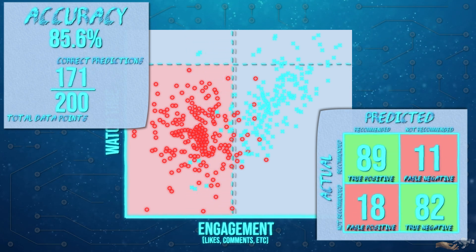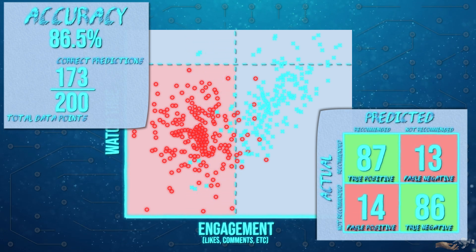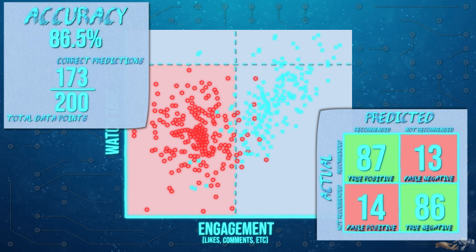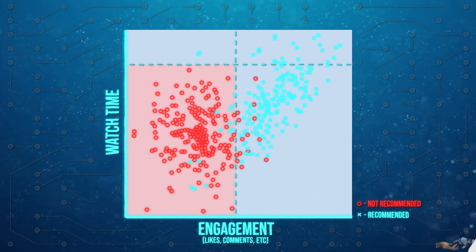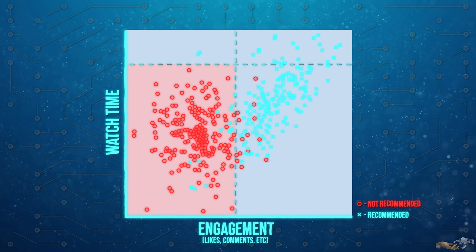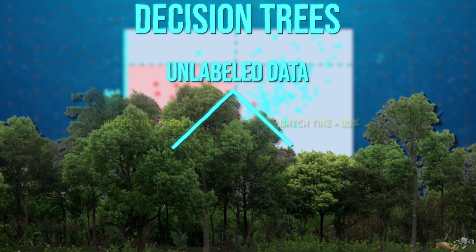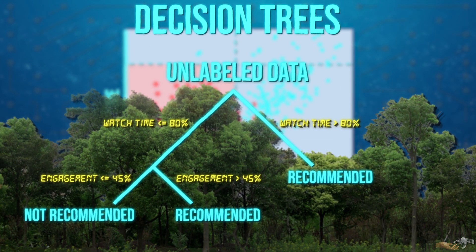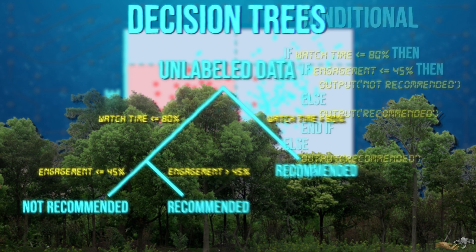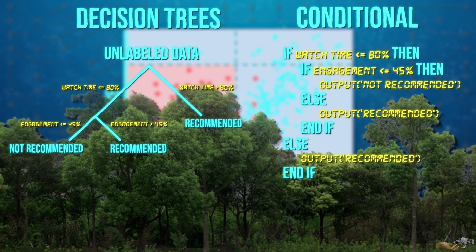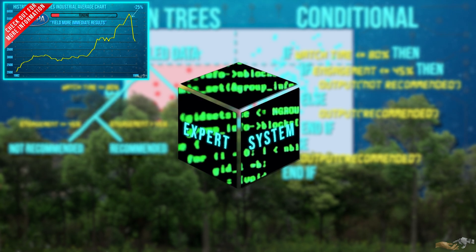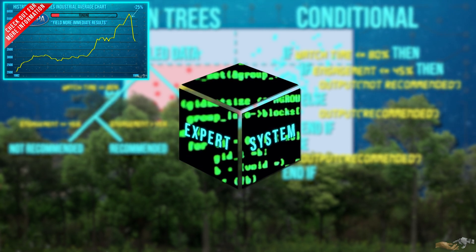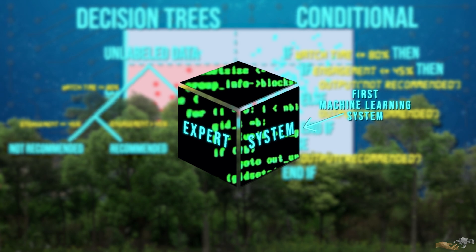At a high level, the job of machine learning algorithms is to maximize model accuracy. This example we just went through is a type of machine learning algorithm referred to as decision trees. As a side note, this tree-based, conditional statement-based machine learning approach draws many parallels to expert systems, which we discussed in the previous video in this series. This is why expert systems were referred to as the first machine learning systems.